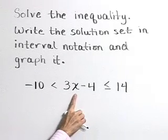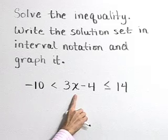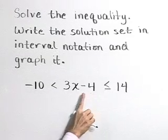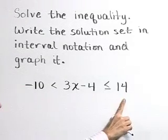So to solve this inequality, we want to isolate x in the middle. Let's start that by adding 4 to each piece of the inequality.